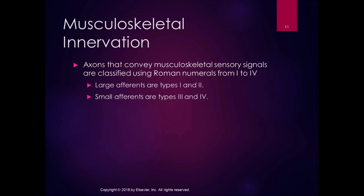On page 194 is table 10.1. That is a really nice little summary of all the different axon classifications — their stimulus, receptors, and designation — for proprioception, cutaneous innervation, and nociception. It's a nice table that puts it all together.